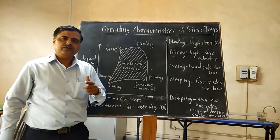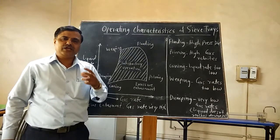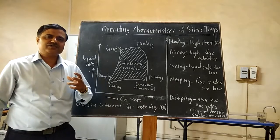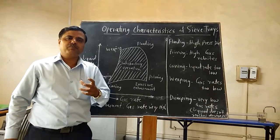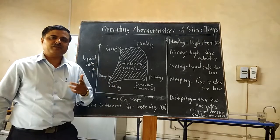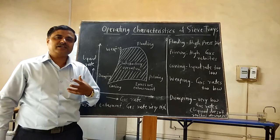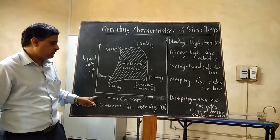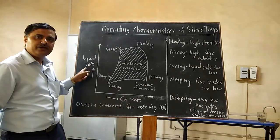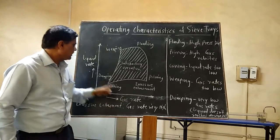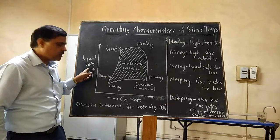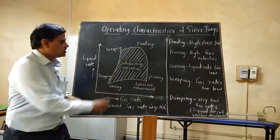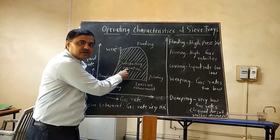Depending upon the flow rate of the gas and liquid, the gas and liquid flow rates should be such that the column operates satisfactorily. If you see this graph, it plots gas rate versus liquid rate. On the x-axis, the gas rate is there; on the y-axis, the liquid rate is there. The shaded portion of this graph gives us the satisfactory operation of the sieve tray column.